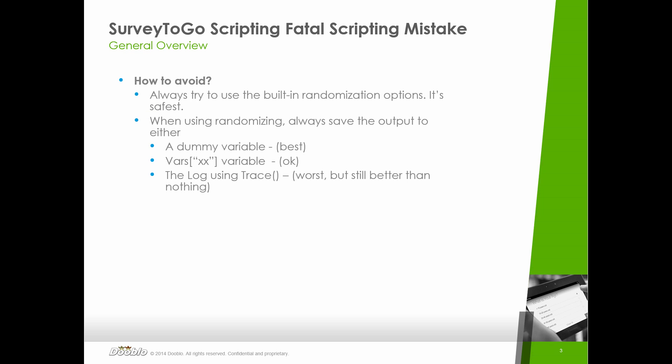If you can't use the built-in randomization option for whatever reason, you absolutely want to save your output of the randomization — in the following order. First, save it to a dummy variable; I'm going to show you how in a couple of moments. That's the safest and best technique — always save it. You can also save the output to a global vars variable, because global vars are serialized, saved, and later on you can search for them in the log.